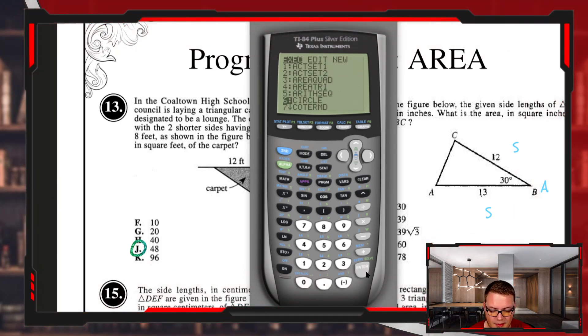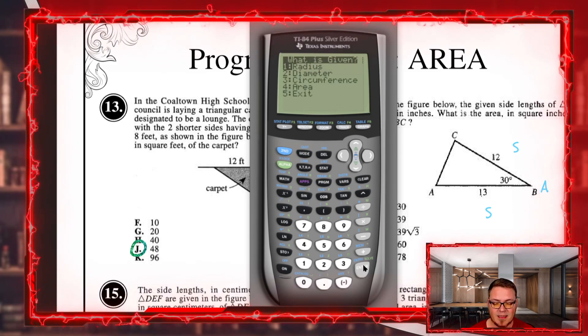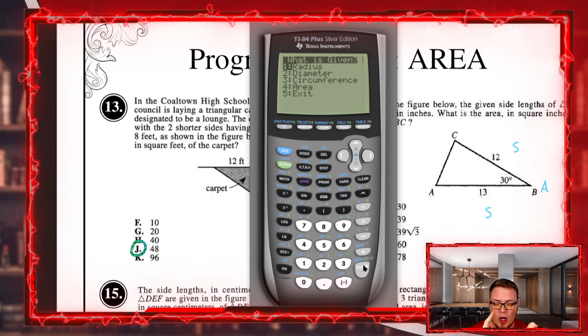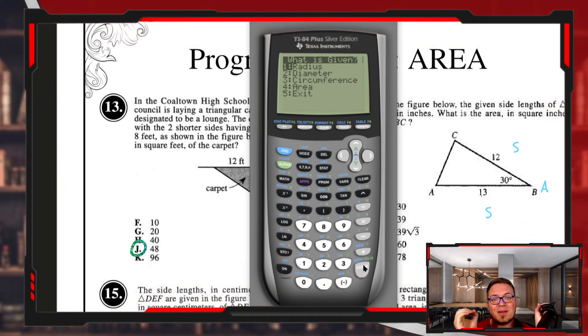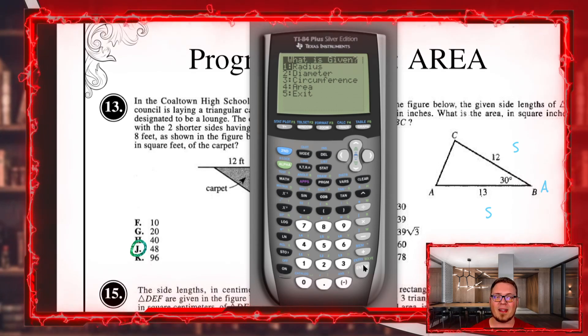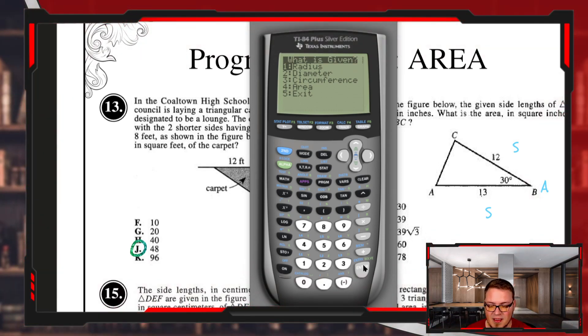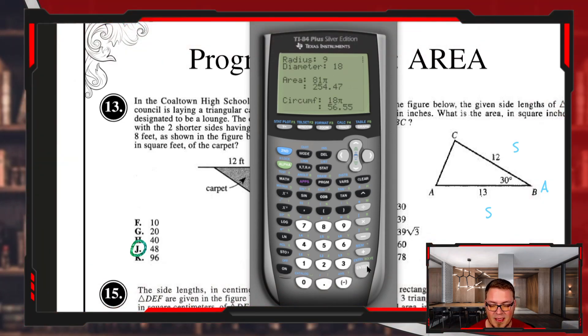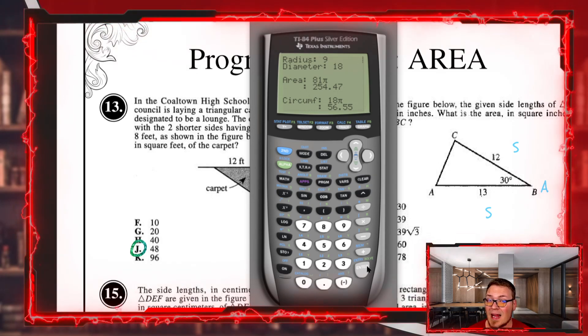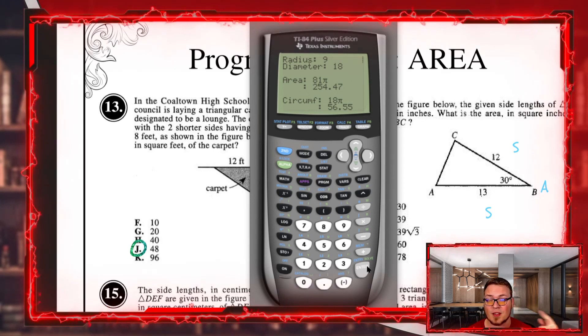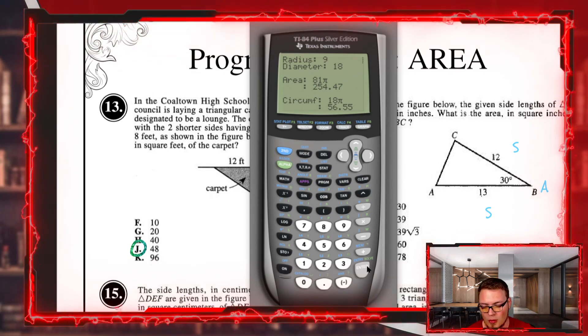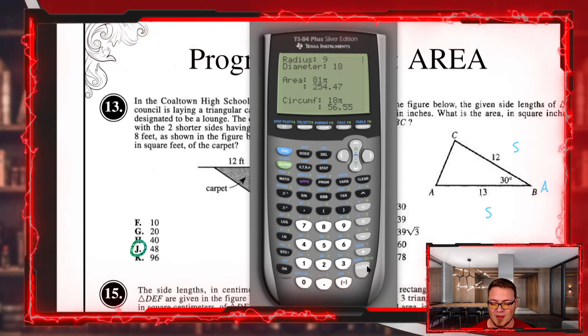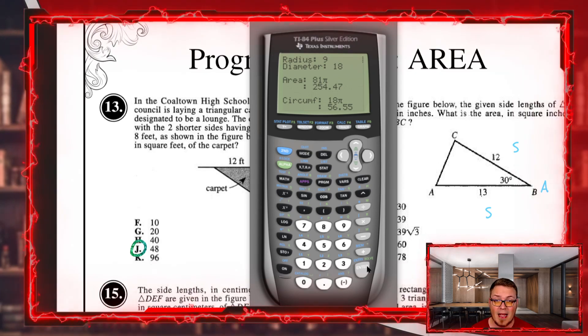The last thing we have is circles. If I run this, it asks what are you given: radius, diameter, circumference, or area? This program is so nice because no matter what you've been given, it gives you everything else. Let's say you have the radius of a circle and maybe the radius is 9. It tells you the diameter is 18, the area is 81 pi as well as the decimal form, and the circumference is 18 pi. This is a one-stop shop for everything related to circles.